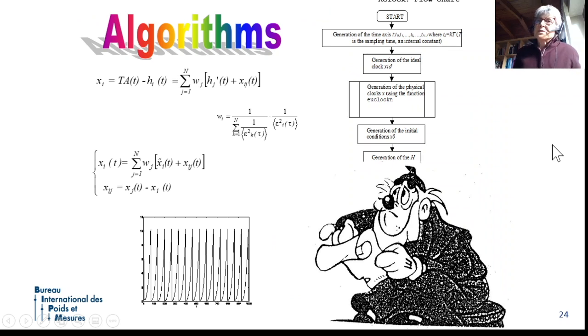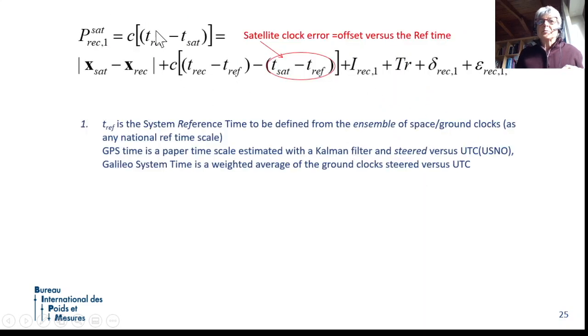Other issues are algorithms, and on algorithms I could talk for another tutorial, because it's my job. There are many things to be processed, and algorithms are sometimes known, sometimes they need to be developed for this type of problem. Let's write again the pseudo-range equation. I told you, for example, the satellite is telling you which is the offset between the satellite clock and the reference time. What is the reference time?